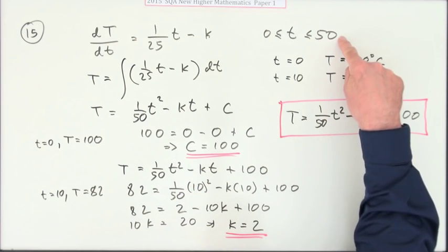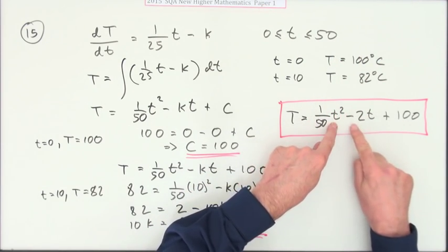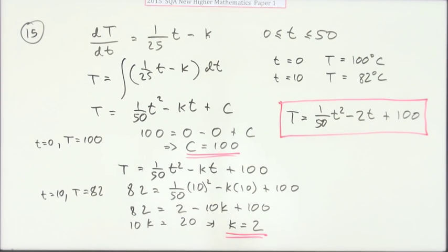What would that be anyway if you waited your 50 minutes? That's 1/50 of 50 squared - it's just 50, and then that's minus 100. That'd be 50 degrees. That's still hot enough to drink. You could wait a whole period, then go back to a cup of coffee and it was fine.